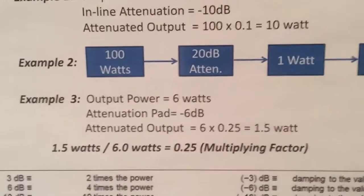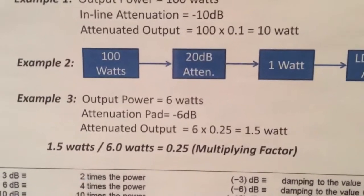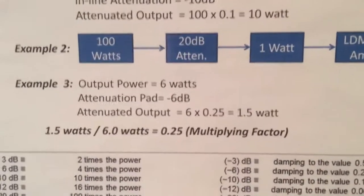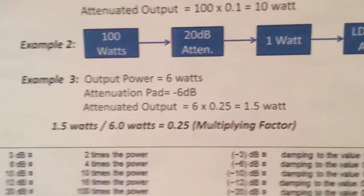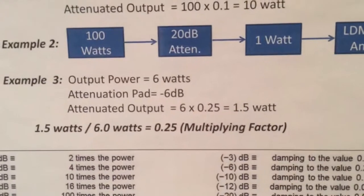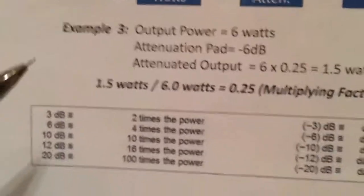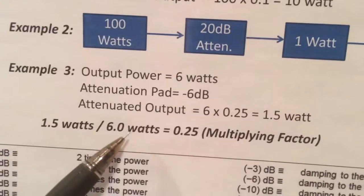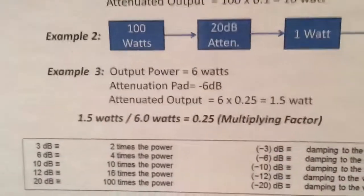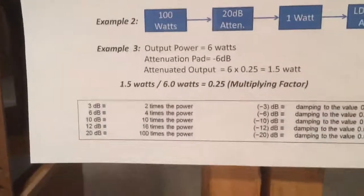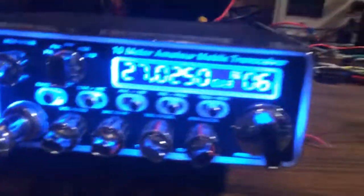You can also work this the other way: if you need 1.5 watts and you have a 6 watt output, 1.5 divided by 6 is 0.25 — that gives you the multiplying factor, and you find the dB level from there. There are charts and online calculators available for this. Now we swing back to the Striker radio and key it up. On the 50 watt scale, six watts is a little over five watts on the meter, and we can confirm we're at about six watts.